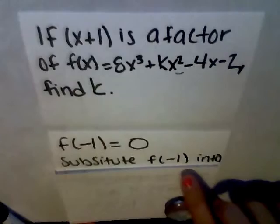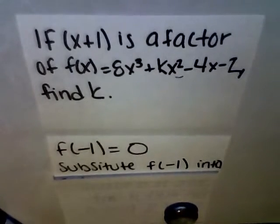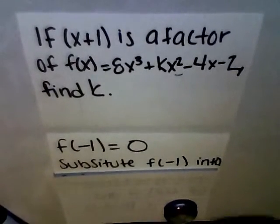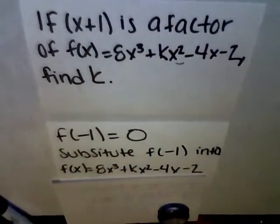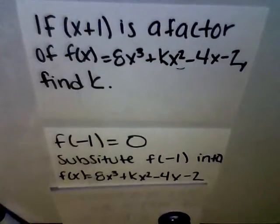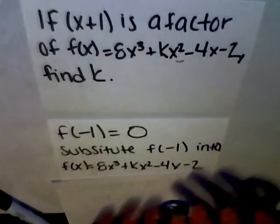Now, we need to substitute the f of negative 1 into the equation f of x equals 8x to the third plus kx to the second minus 4x minus 2.